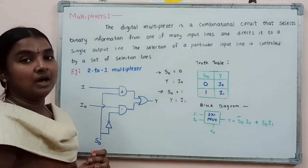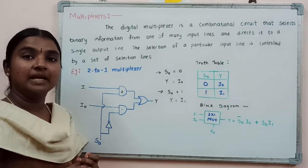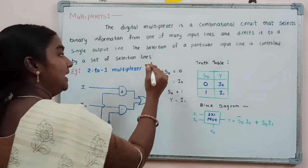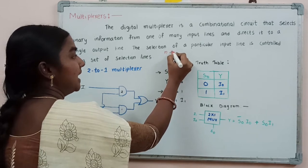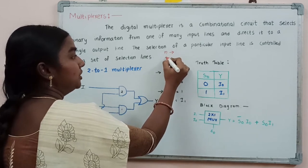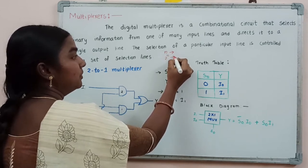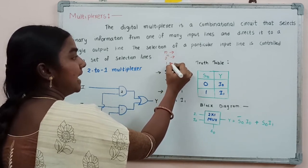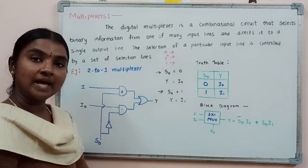For any multiplexer, it has n number of selection lines, 2^n number of input lines, and 1 output line.